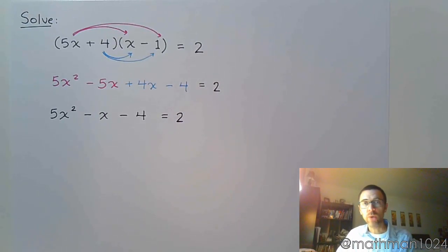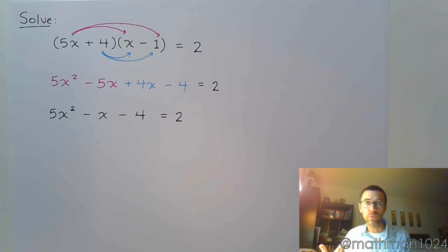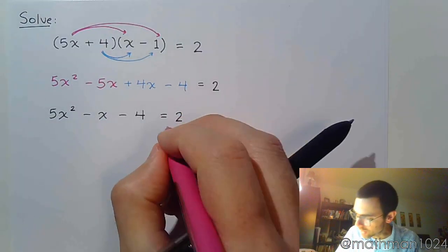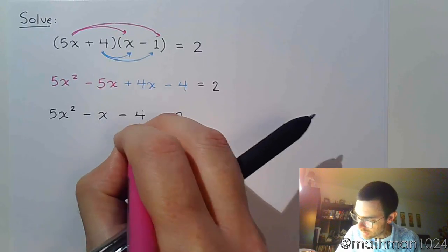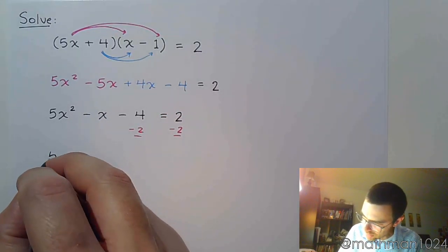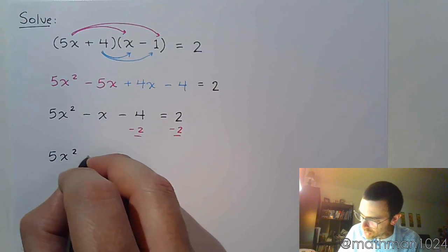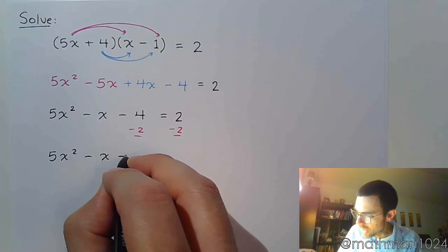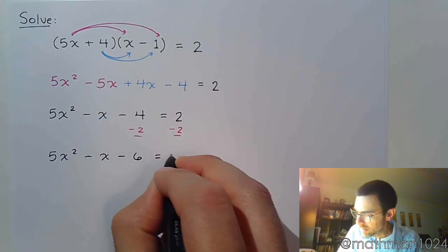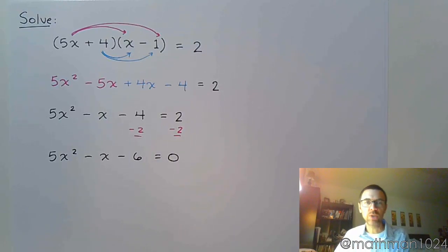All right. So now we need to get 0 on one side, so we get that just by subtracting 2. So subtract 2 on both sides. 5x squared minus x minus 6 equals 0.